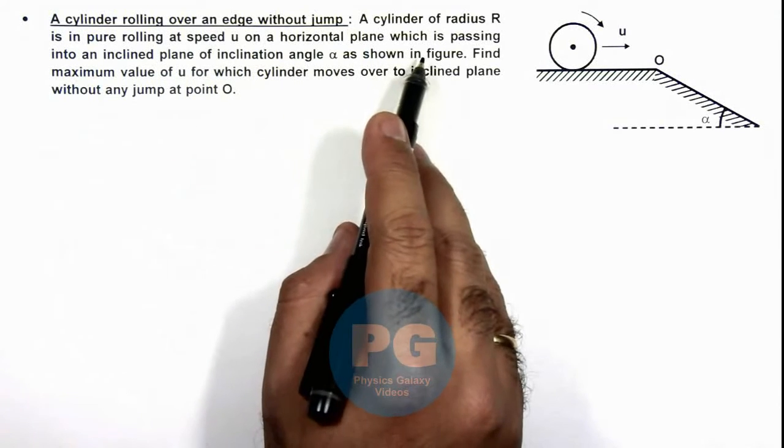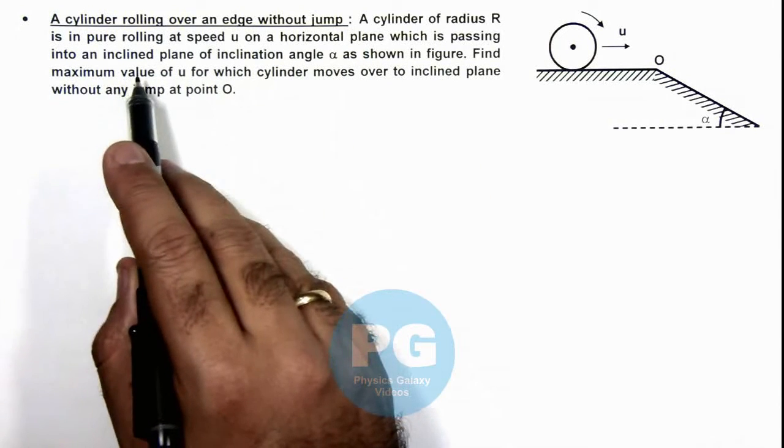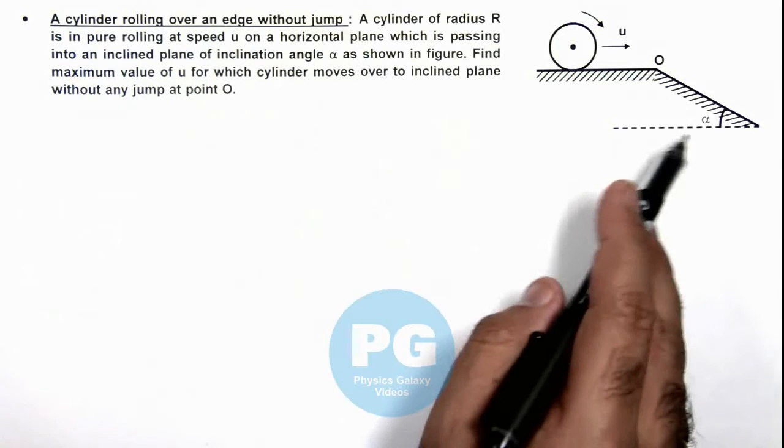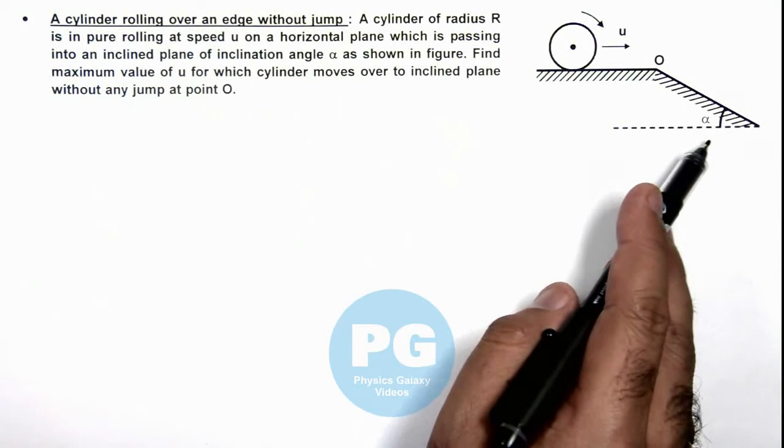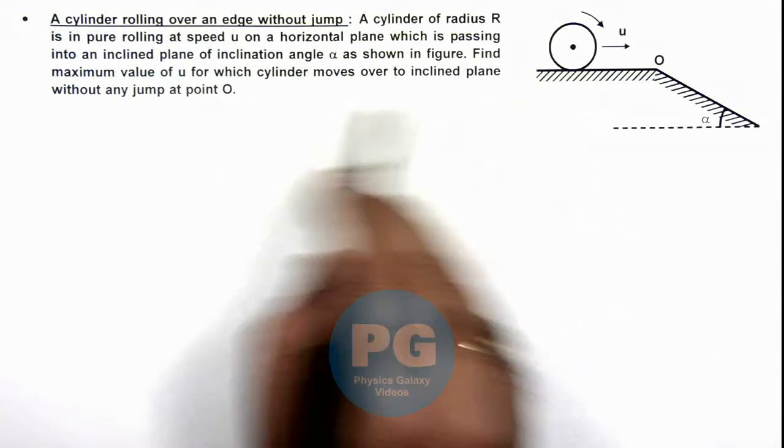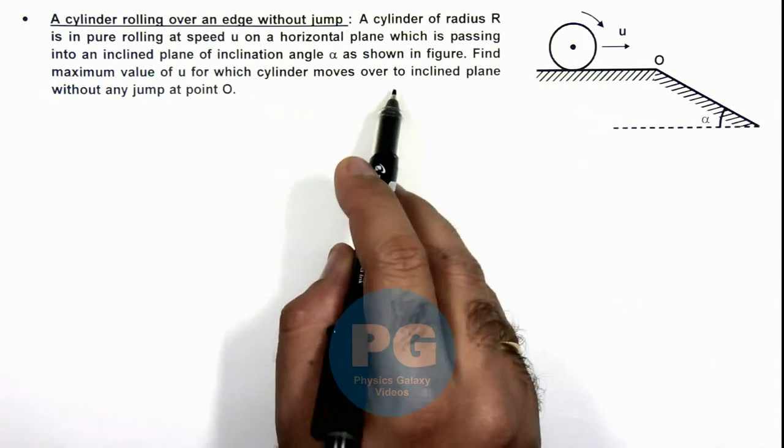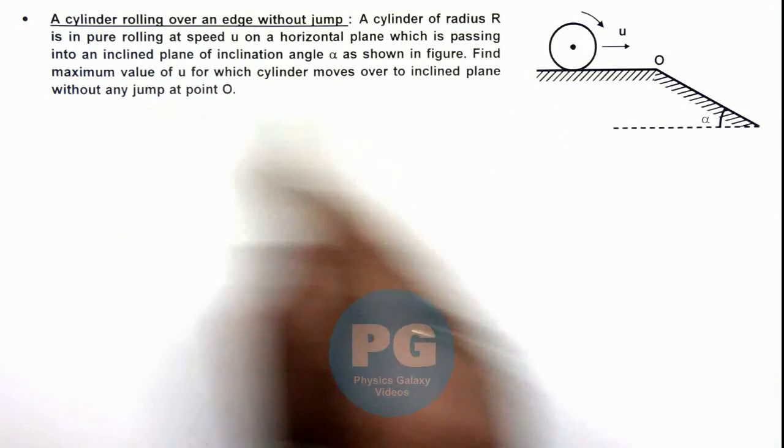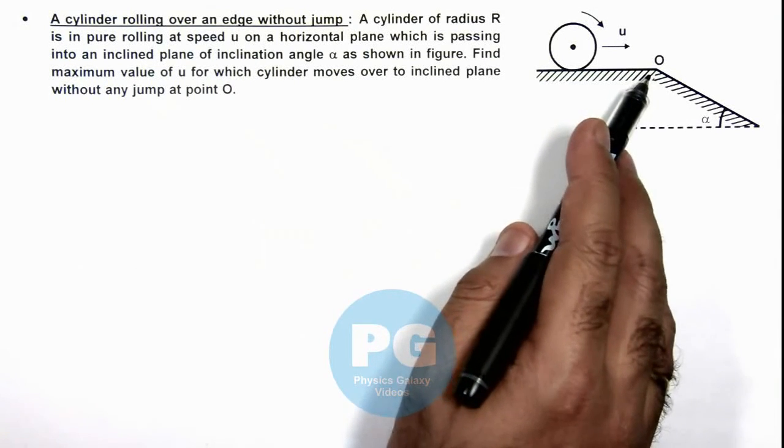On a horizontal plane which is passing into an inclined plane of inclination angle alpha, here we can see. We are required to find the maximum value of u.